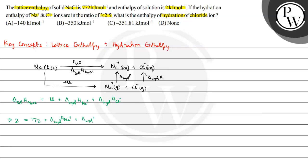Now the hydration enthalpy of Na+ to Cl- ratio is 3:2.5, which we can also write as 6:5. So delta hydration H(Na+) divided by delta hydration H(Cl-) = 6:5. Therefore, the enthalpy of hydration of Na+ equals (6/5) multiplied by the enthalpy of hydration of Cl-.